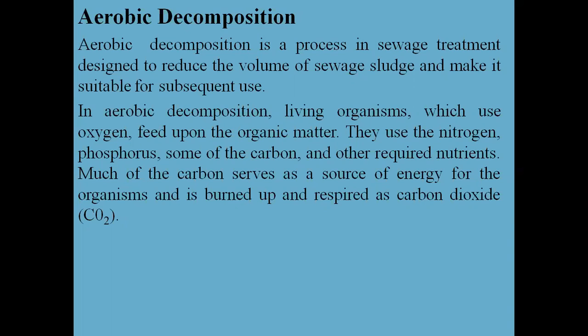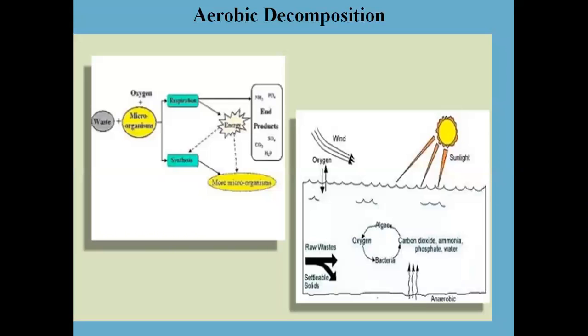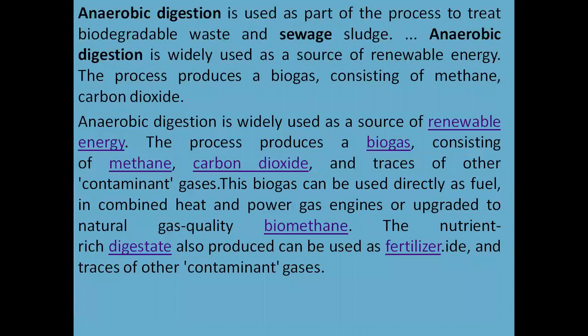In aerobic decomposition, living organisms use oxygen to feed upon the organic matter. They use nitrogen, phosphorus, some carbon, and other required nutrients. Much of the carbon serves as a source of energy for the organism and is burned up and respired as carbon dioxide (CO2). The diagram of aerobic decomposition shows: water plus microorganisms plus oxygen produces energy for microorganisms and generates various gases such as CO2, SO4, S2O, etc.